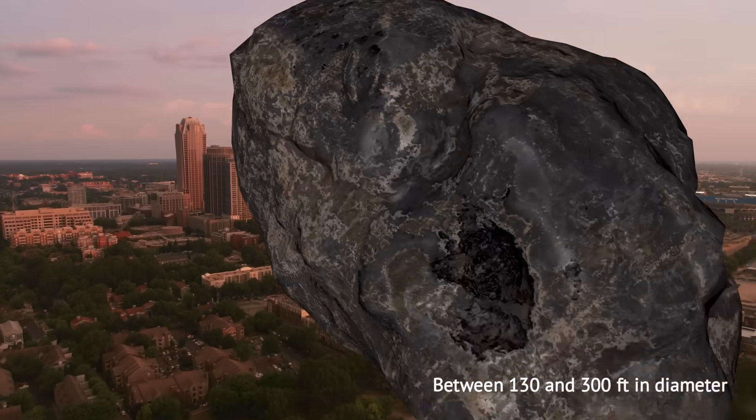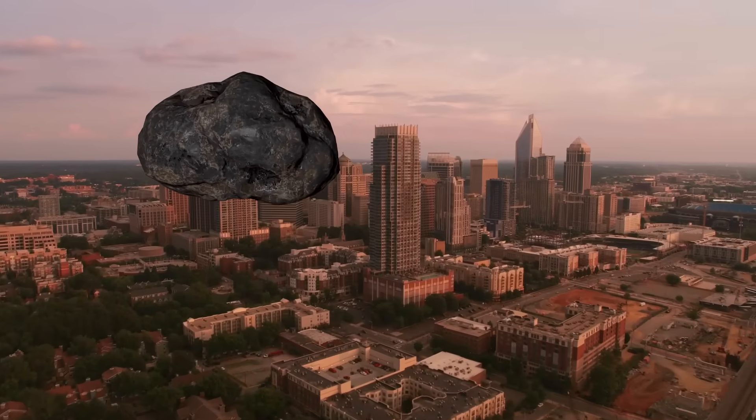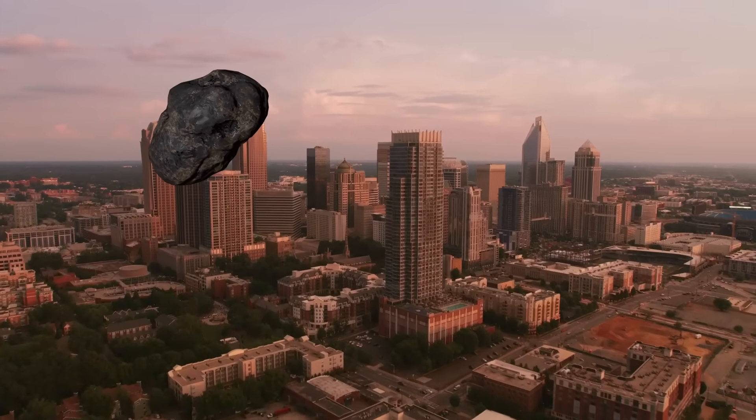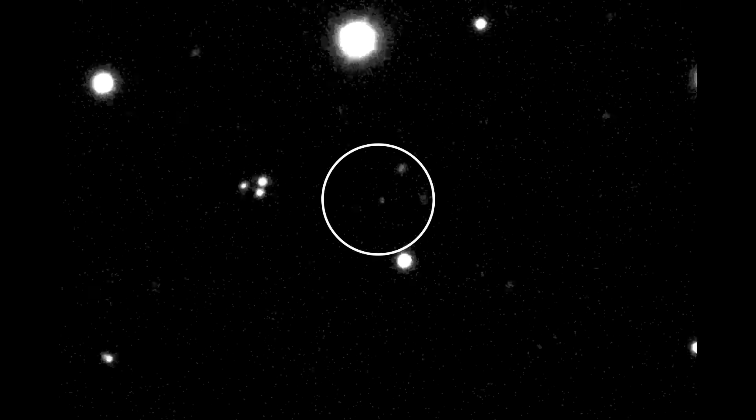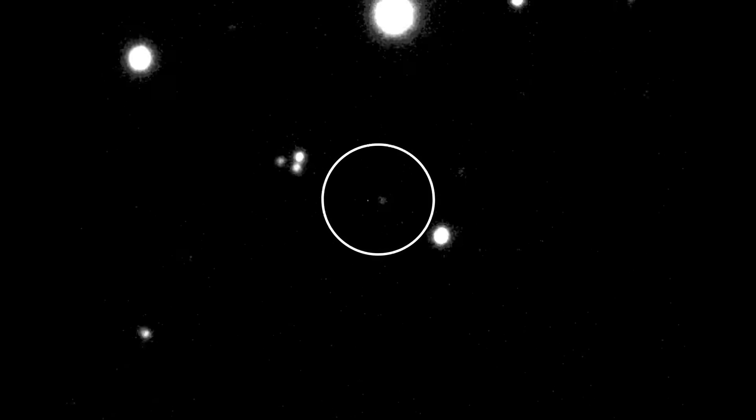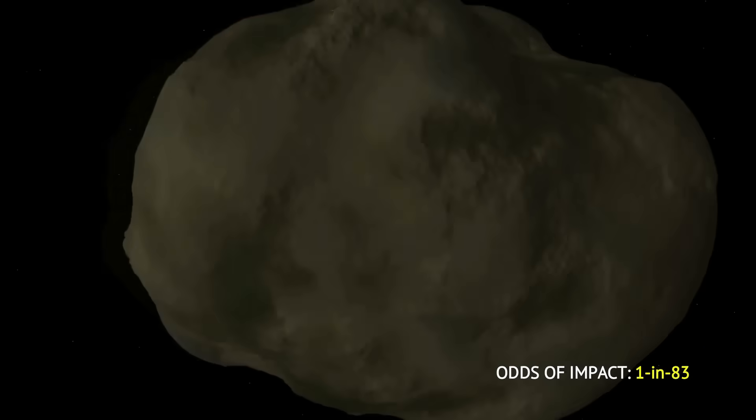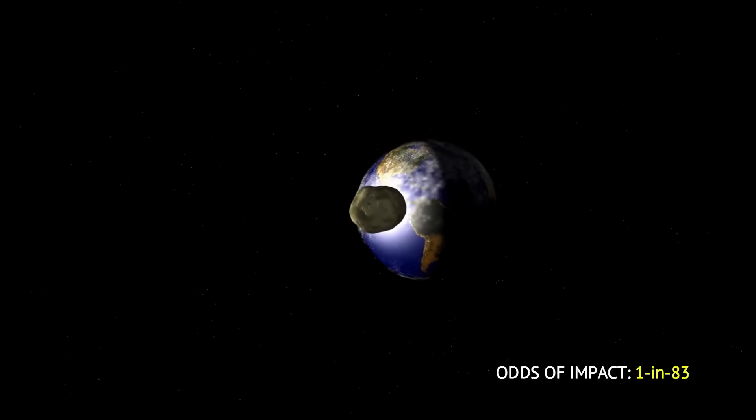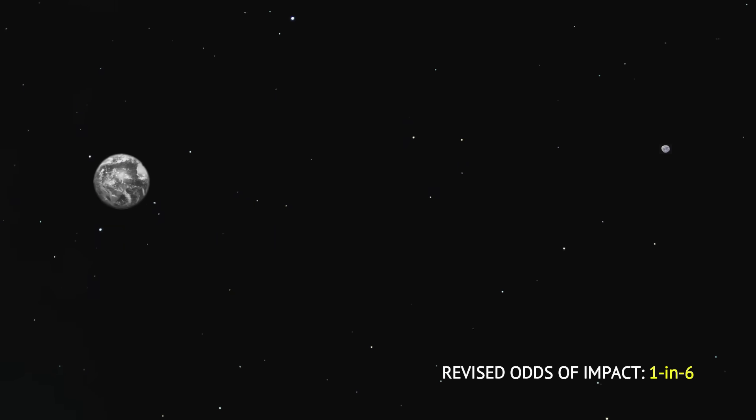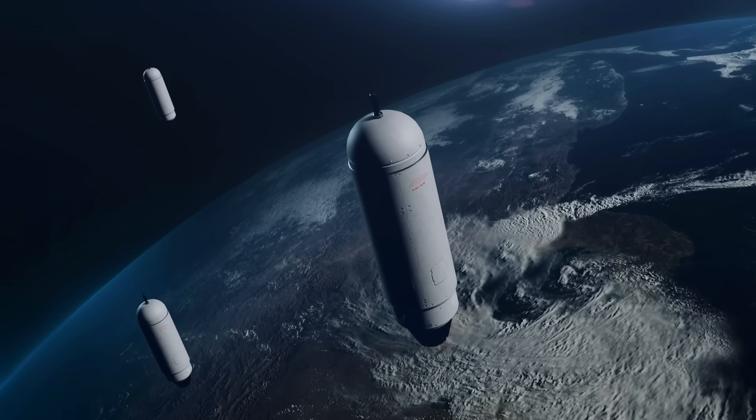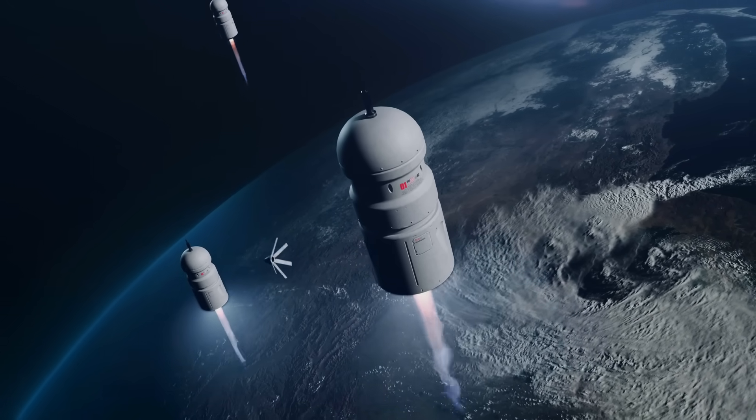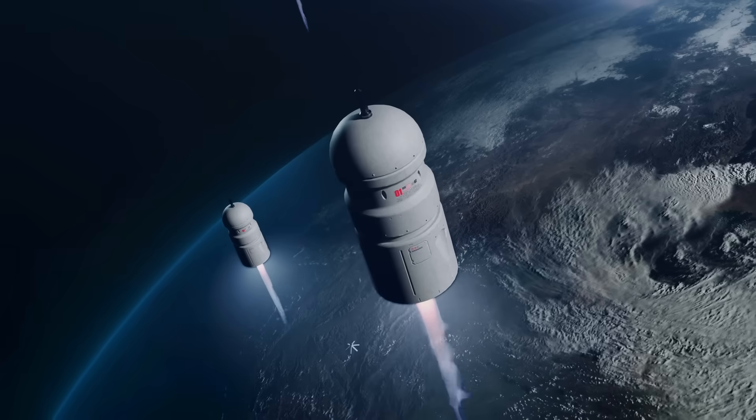The asteroid is about 150 feet or 50 meters wide, comparable to the length of a commercial airliner or the height of a 15-story building. When first detected, it had a 1.3% chance of impacting Earth, equivalent to a 1 in 83 probability of collision in 2032. However, further observations on December 29 increased the estimated odds to 1.6%, equivalent to 1 in 67 probability. That impact risk is significant enough to activate global planetary defense response procedures for the first time in history.